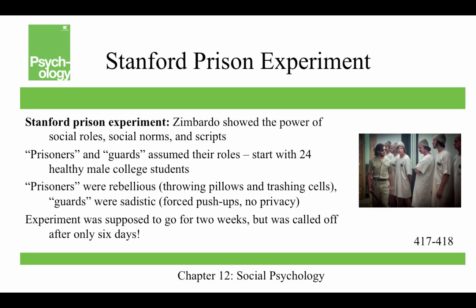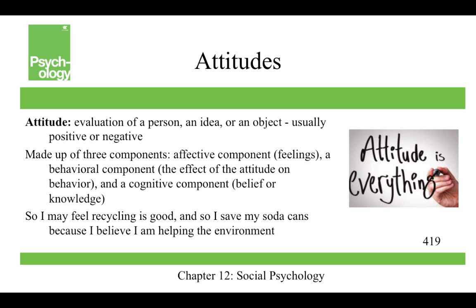The Stanford Prison Experiment was done by Zimbardo, and he wanted to show the power of social roles, social norms, and scripts, and also the power of the situation. Prisoners and guards assumed their roles, starting with 24 healthy male college students. After six days, the prisoners became rebellious — throwing pillows and trashing their cells — and the guards were sadistic, forcing prisoners to do push-ups and giving them no privacy. The experiment was supposed to go for two weeks, but they had to call it off after only six days.